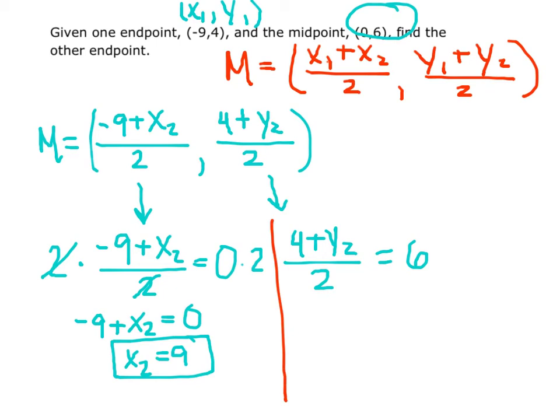Now let's solve for y sub 2. Again, times both sides by 2. And what's left on the left is 4 plus y sub 2 equals 12. Subtracting 4 from both sides, we solve y sub 2 equaling 8.